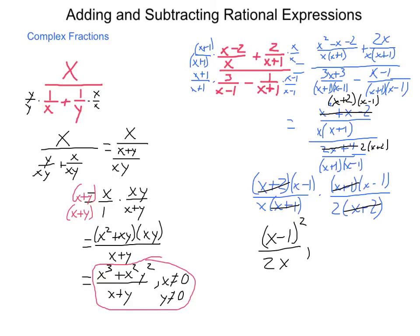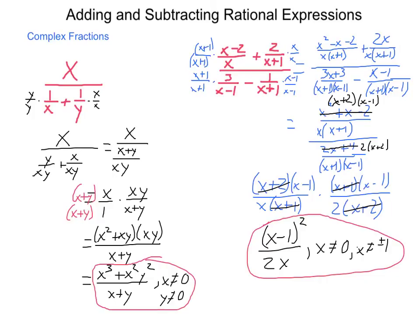Restrictions: anything that made any denominator equal to 0. If x was 0, if x was negative 1, or if x was positive or negative 1 — so x cannot equal 0, positive 1, or negative 1. These would have made the original expression undefined. Simplification of complex fractions takes practice and time. Make sure you understand the process — it is long, but not overly complex; we are simply repeating the same process again and again. Next up is solving equations involving rational components.